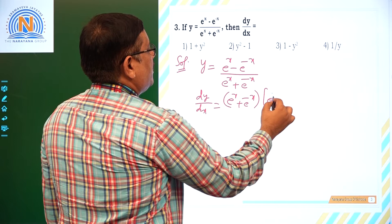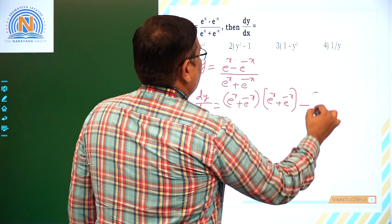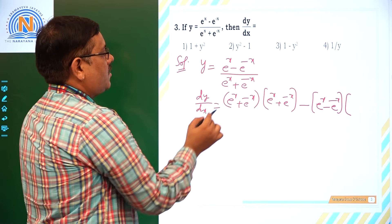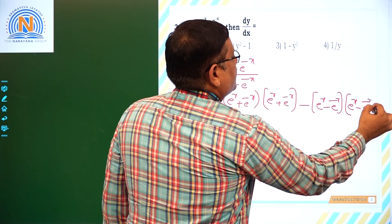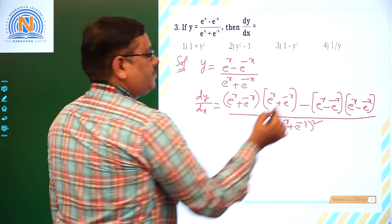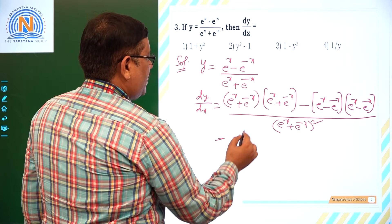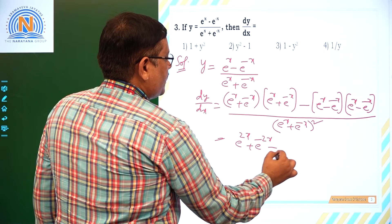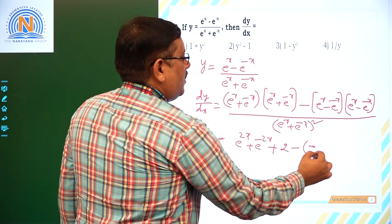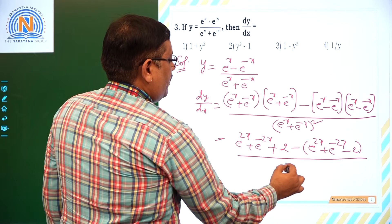Applying the quotient rule — v · d/dx(u) minus u · d/dx(v), divided by v²: the denominator's derivative is eˣ − e⁻ˣ. Expanding the numerator: (eˣ + e⁻ˣ)² = e²ˣ + e⁻²ˣ + 2, which is in the form (a + b)². Similarly (eˣ − e⁻ˣ)² = e²ˣ + e⁻²ˣ − 2. After cancellation the e²ˣ and e⁻²ˣ terms cancel, and +2 minus (−2) gives 4, leaving 4 / (eˣ + e⁻ˣ)².